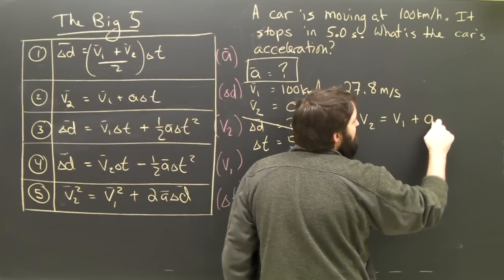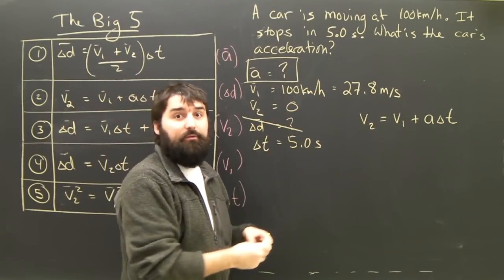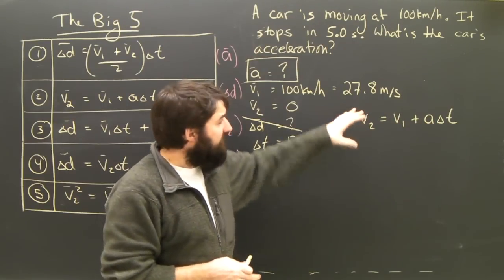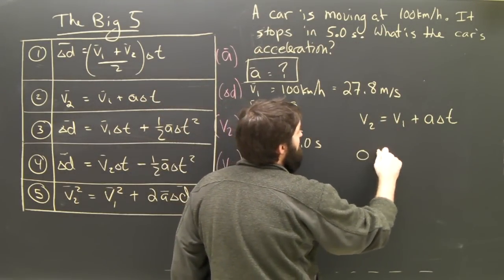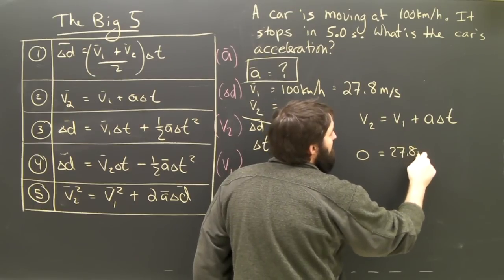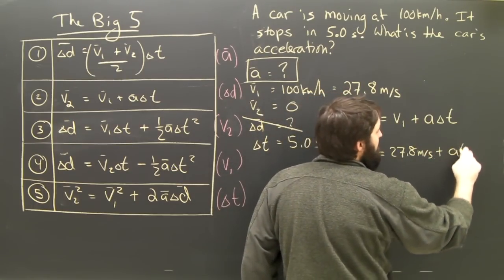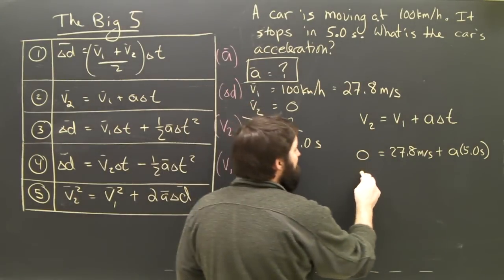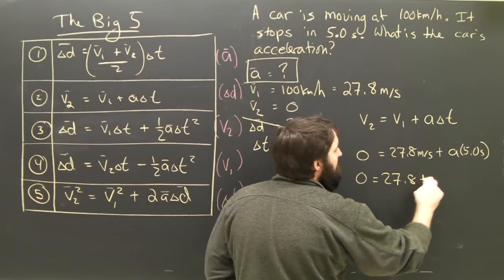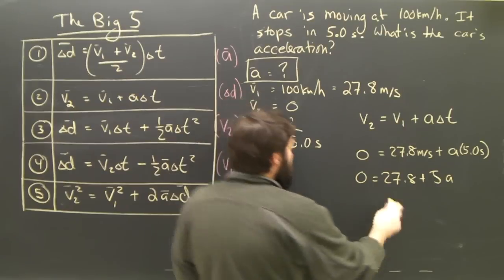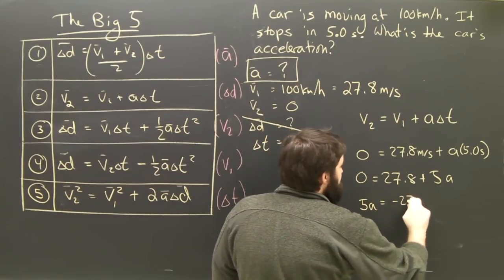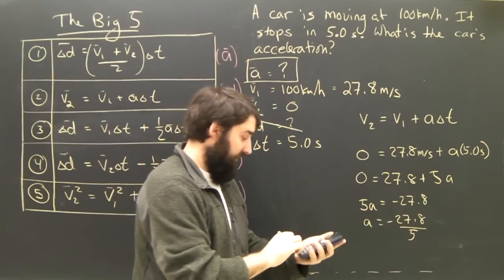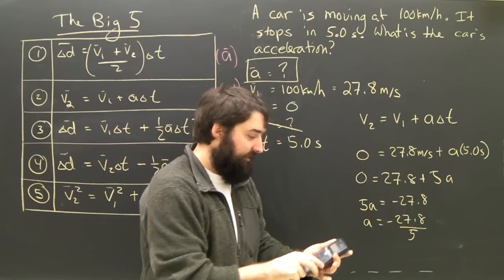V2 equals V1 plus A delta T. I can rearrange now before I put my numbers in, which would be A equals V2 minus V1 over T. But if you don't like to do math with letters, you can always dump your numbers in first. So: zero equals 27.8 meters per second plus A times five seconds. Always include your units, at least in the first line. Now I can write it without the units: zero equals 27.8 plus 5A. That's an easy enough equation to rearrange: 5A equals negative 27.8, so A equals negative 27.8 divided by 5. 27.8 divided by 5 is 5.6.